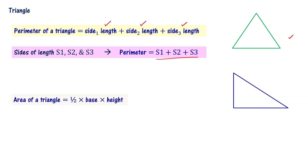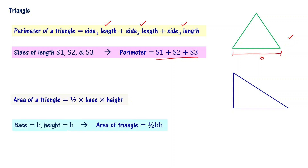Area of the triangle is defined as half base times height. For this particular triangle, this is my base, denoted by B. Then what is the height I have to take? If I take height equal to H, then area of the triangle is half BH.